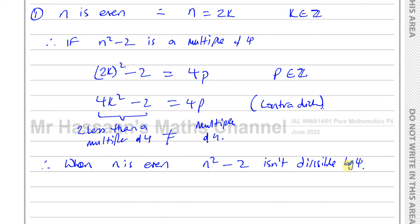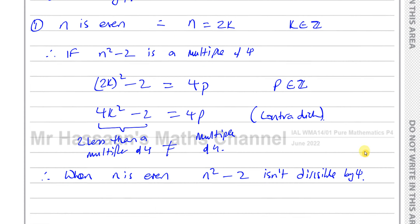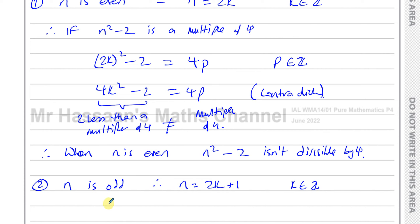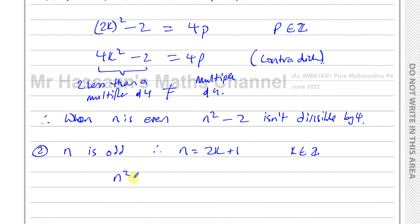We have to prove it's never divisible by 4 for any case, so now let's take the case where n is odd. When n is odd, we can say n equals 2k plus 1, where k is an integer — one more than an even number is an odd number. So we assume n squared minus 2 equals 4p, where p is an integer, and replace n with 2k plus 1.